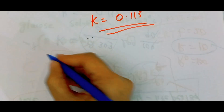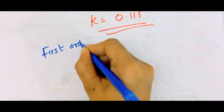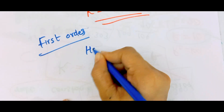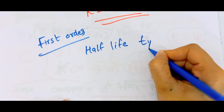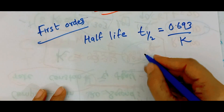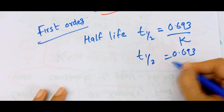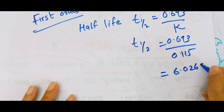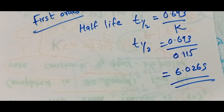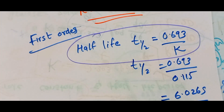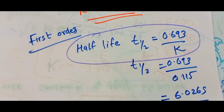Now find the half-life period for this first-order reaction. We have rate constant k = 0.115. For a first-order reaction, half-life t½ = 0.693/k. So t½ = 0.693/0.115 = 6.026 seconds.